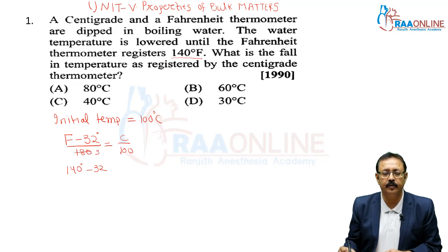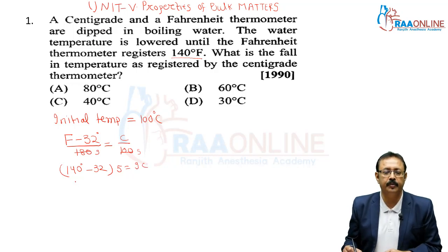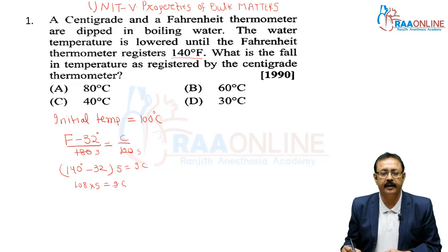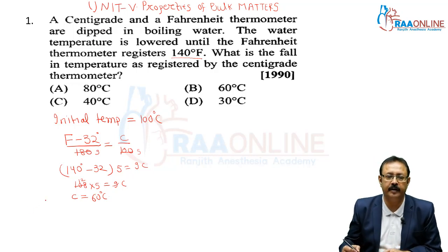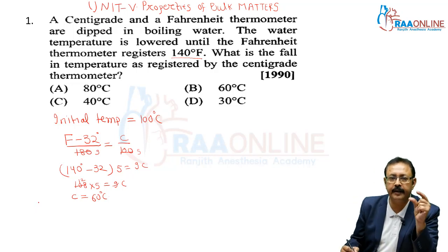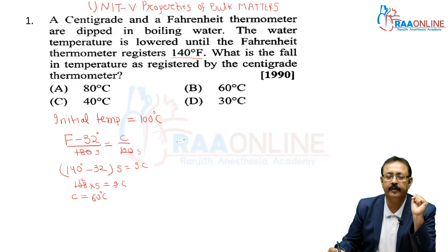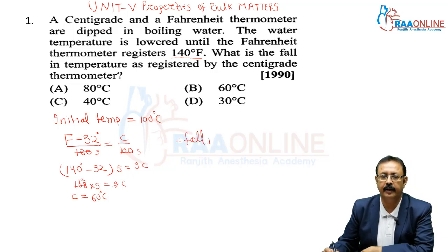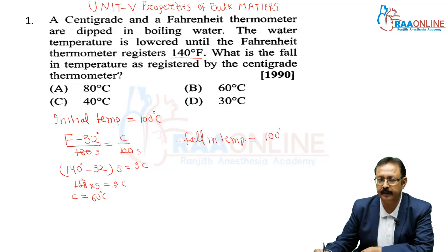We want to convert 140 degrees Fahrenheit into degrees Celsius. So: (140 − 32) × 5 = 9C, giving 108 × 5 = 9C, so C = 60 degrees centigrade. This means the water temperature has come down from 100 degrees to 60 degrees centigrade, so the fall in temperature is 100 − 60 = 40 degrees centigrade.